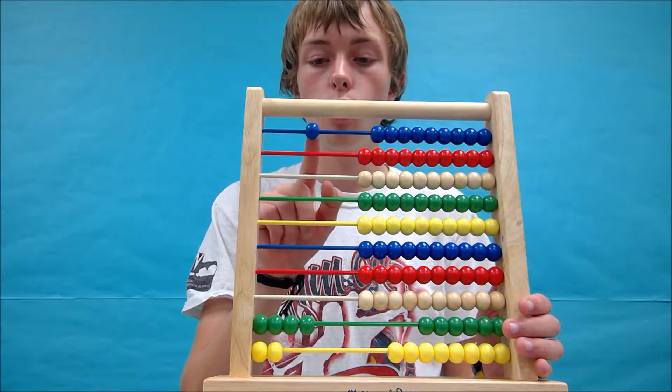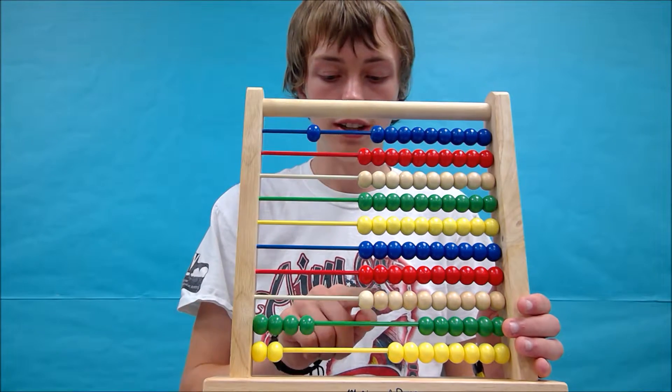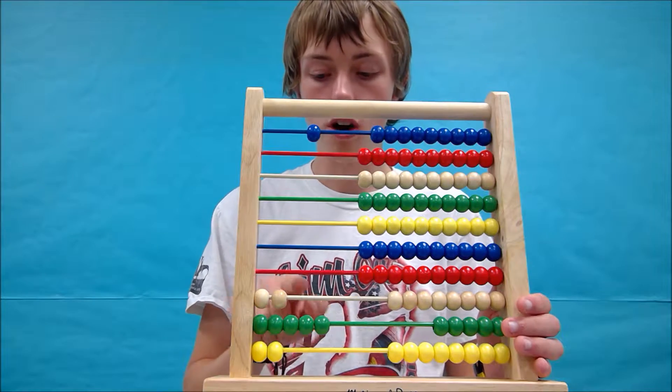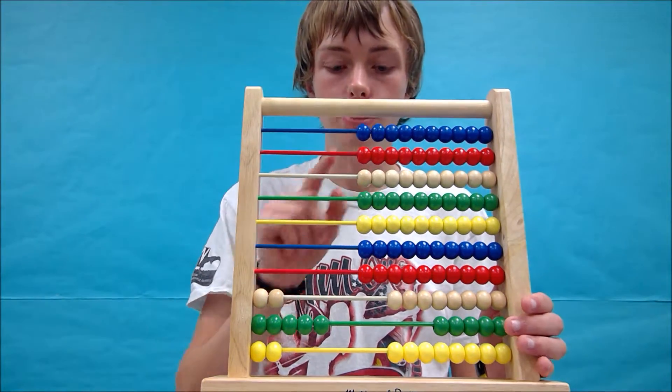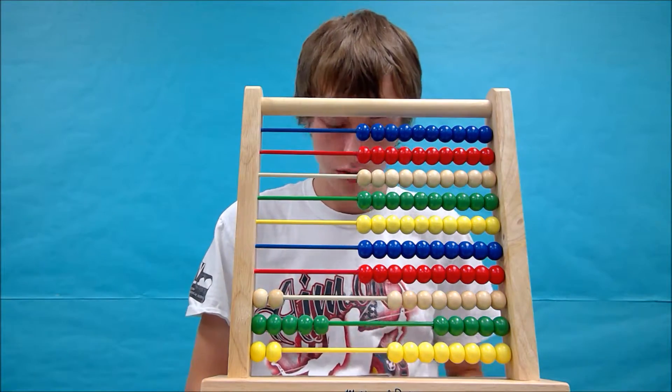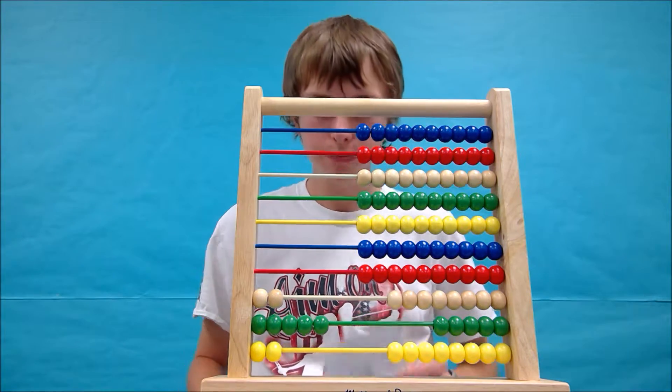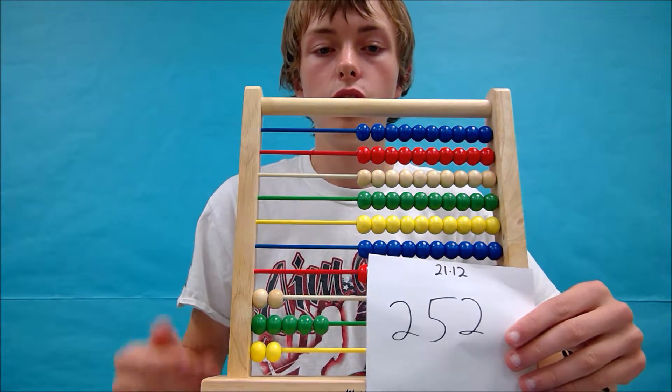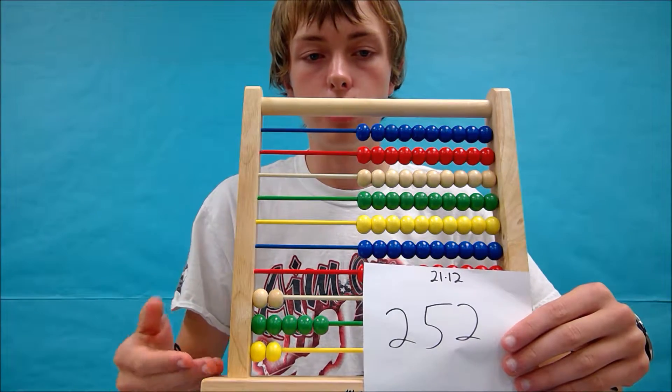Now we need to multiply 21 by 1, so we need to add 21 to give us our answer. We write it down: 252. So this is one way to do it, and this is how your abacus should look.